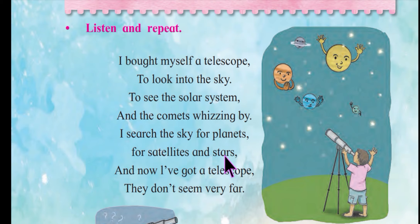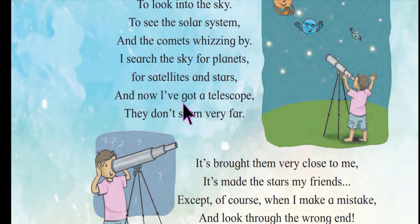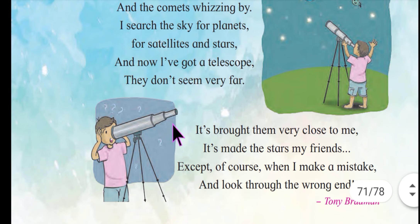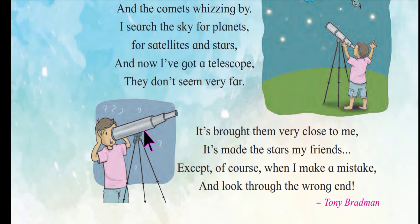So he was searching for all these things — satellites, stars, planets, comets, the solar system — in the sky. And now I've got a telescope, they don't seem very far. Ab uske paas telescope aa gaya hai, jisse door ki cheezein paas mein dikhti hain, so now those planets, satellites, and stars don't seem very far to him anymore.